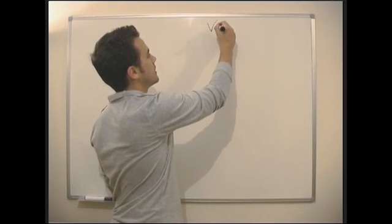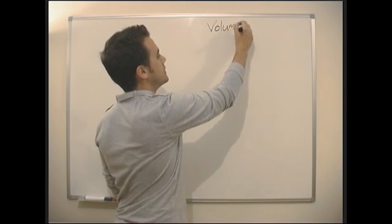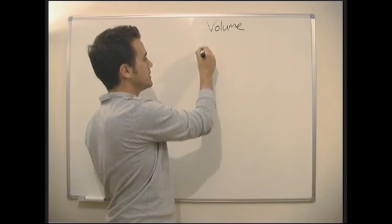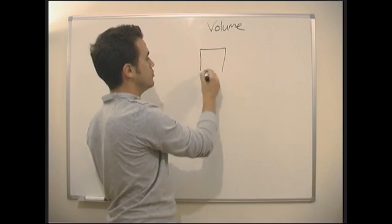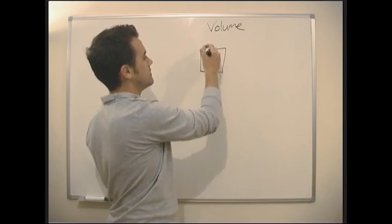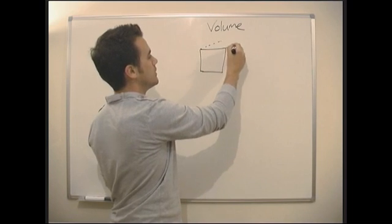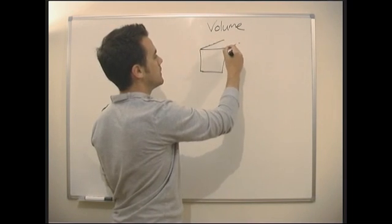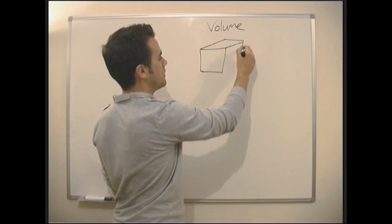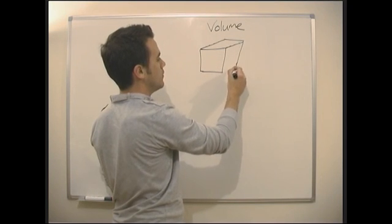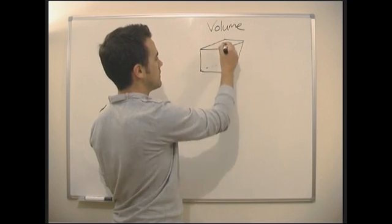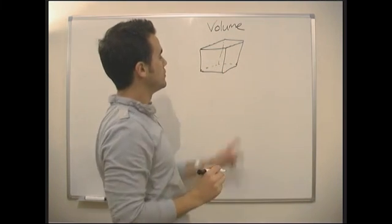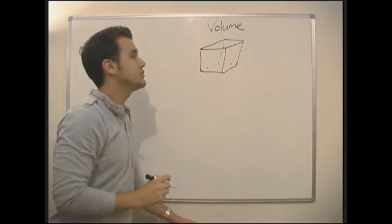The easiest thing is a cuboid. So a cuboid is just a cube. It's a very good example of a cuboid. So a cube, all the sides of a cube are the same.